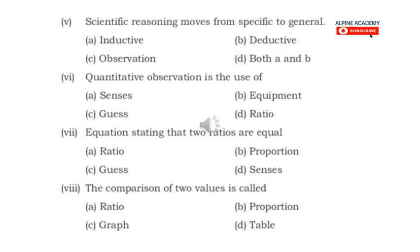Question 7 states: an equation stating that two ratios are equal. The comparison of two values is called proportion. If we keep two values together and compare them, that is called ratio. So when two values are compared, the comparison is called ratio.